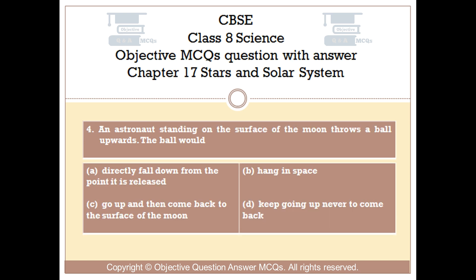Question number 4. An astronaut standing on the surface of the moon throws a ball upwards. The ball would: Option A: directly fall down from the point it is released. Option B: hang in space. Option C: go up and then come back to the surface of the moon. Option D: keep going up never to come back.